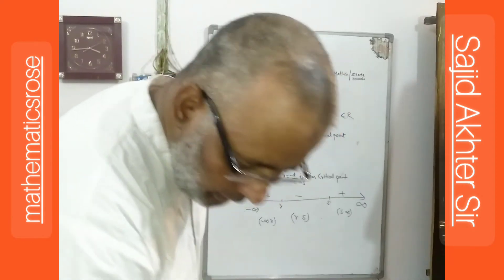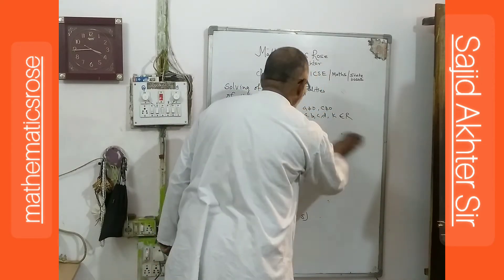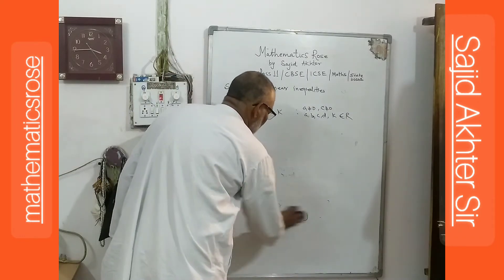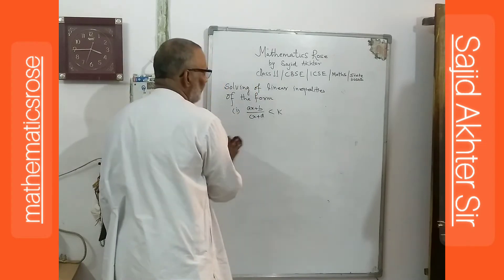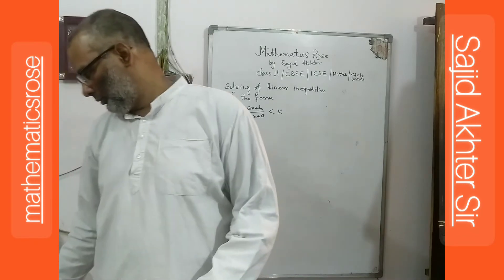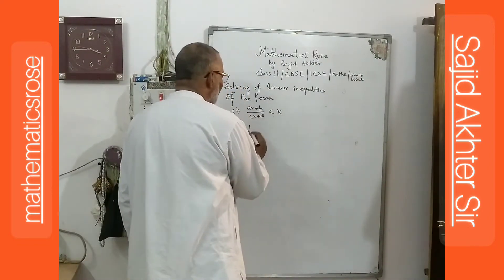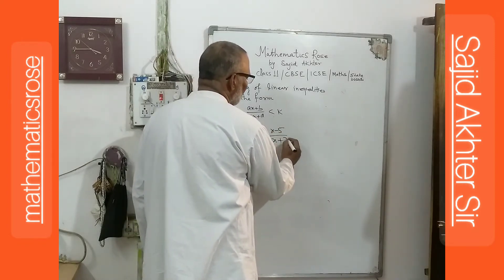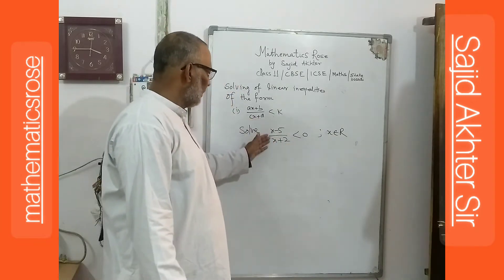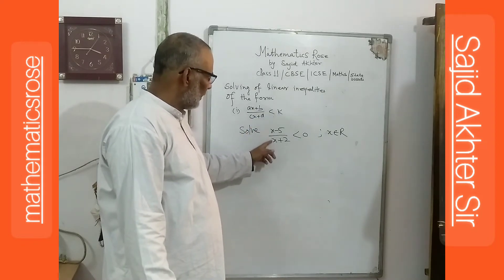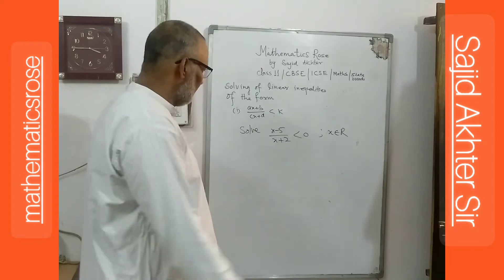Now we are taking one example. Solve: (x minus 5) divided by (x plus 2) is less than 0, where x belongs to the real numbers. Comparing with the general form, the coefficient of x in the numerator is 1 and b is minus 5; the coefficient of x in the denominator is 1 and b is 2. So, the solution is as follows.